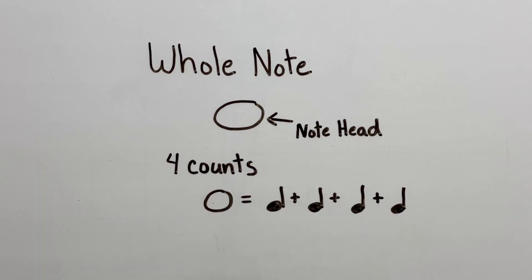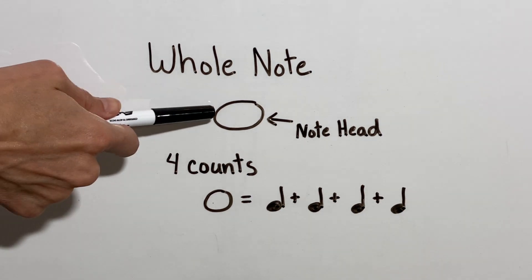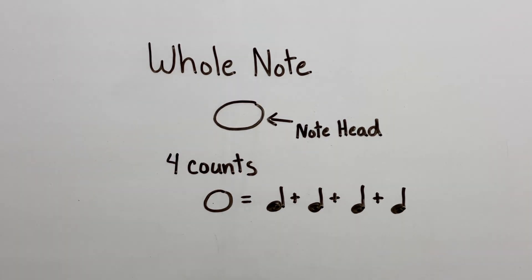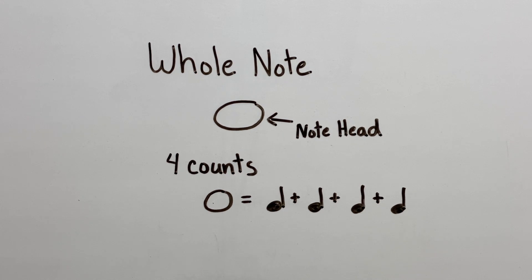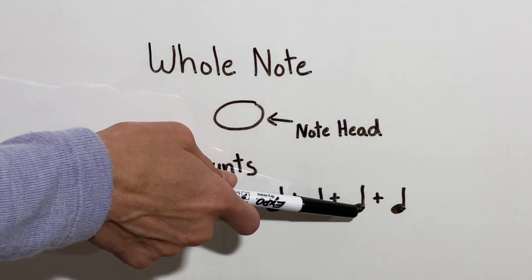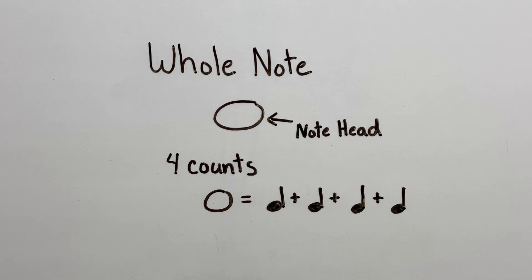The next note we're going to talk about today is a whole note. A whole note looks a little bit different than the other three notes we just learned because it only has a note head. It's not filled in — just this empty note head — and there's no stem. A whole note is going to be four counts or four beats. With my musical math, a whole note is equal to four quarter notes: one plus one plus one plus one. Our whole note is different from the other three, and we need to remember that it gets four counts or beats.